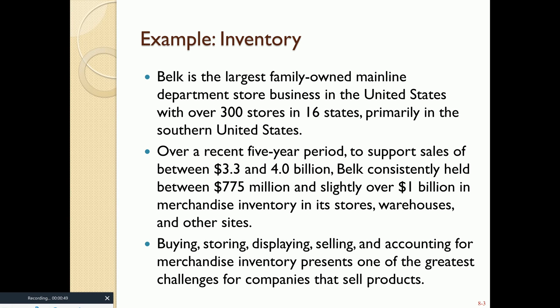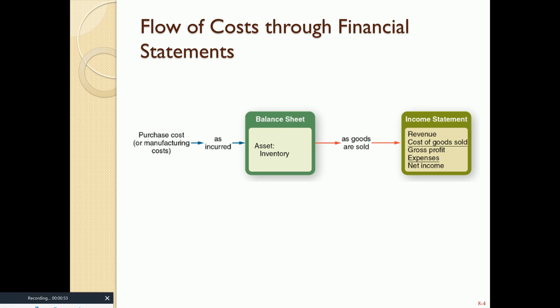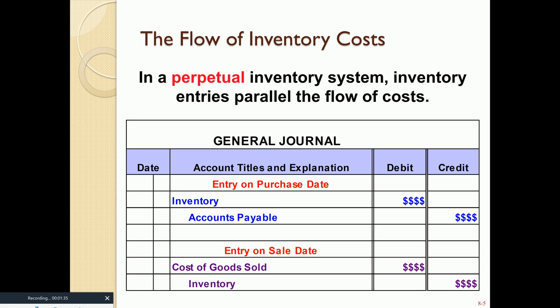Inventory is an asset, and we will show it on the balance sheet. As we buy the inventory, we record it as an asset. When we sell this inventory to our customers, that asset becomes an expense called cost of goods sold. It's subtracted from revenue to get a subtotal called gross profit — sometimes called gross margin. Subtracting all other selling and administrative expenses ultimately gives us net income. That's the flow of costs.